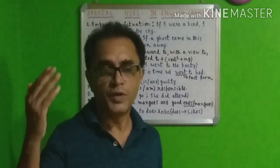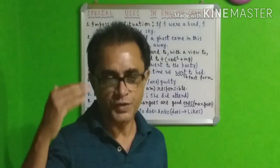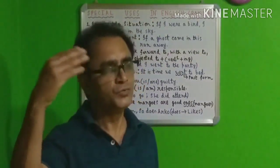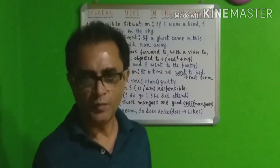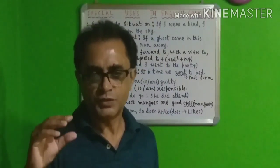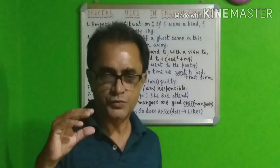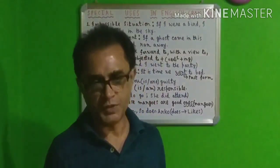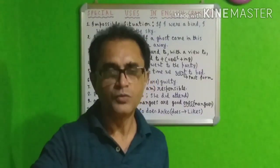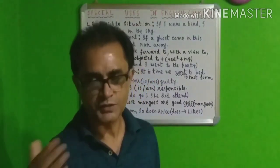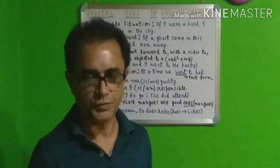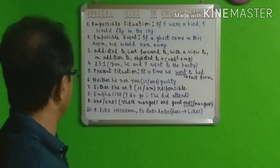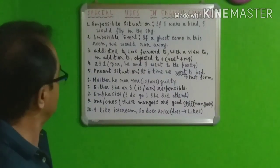Another example: 'If I were the President of India, I would introduce certain reforms for our country.' This is an impossible situation, and you have to use 'were' with the subject. 'If I were you, I would not tolerate such things.' In this way, 'were' is used for impossible situations.